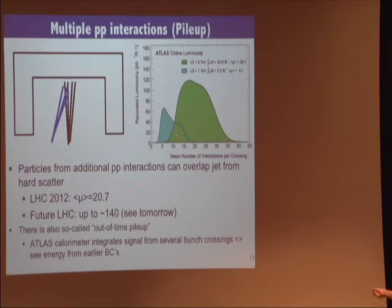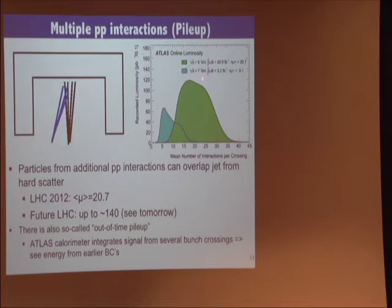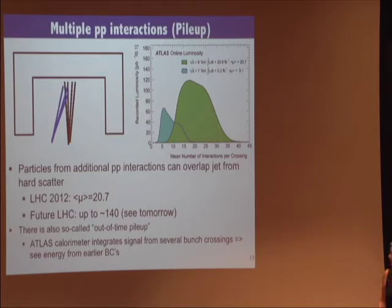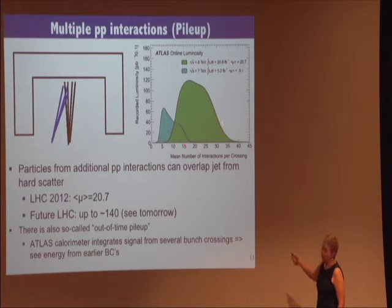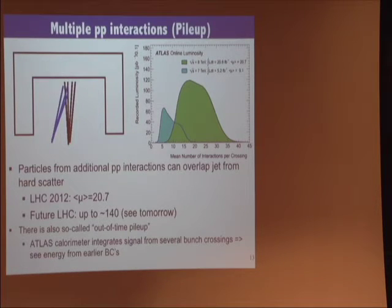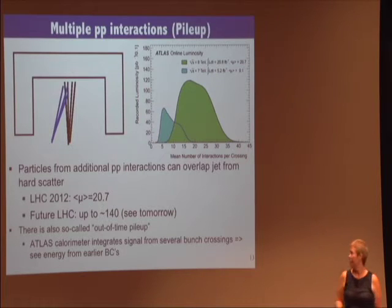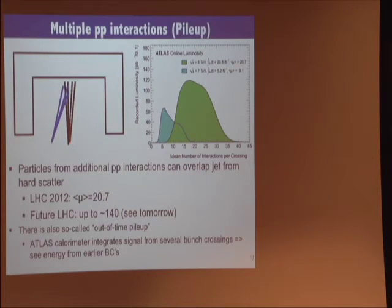At the LHC in 2012, the average number of interactions per crossing was about 20.7 in the 8 TeV data — significantly more, a factor of 2, than in the 7 TeV data. In the future it will be up to 140. We know this mean number because it's directly related to the luminosity — basically luminosity times the inelastic cross-section gives the number of interactions. We can correct for this on average, but event-by-event fluctuations are of course large.